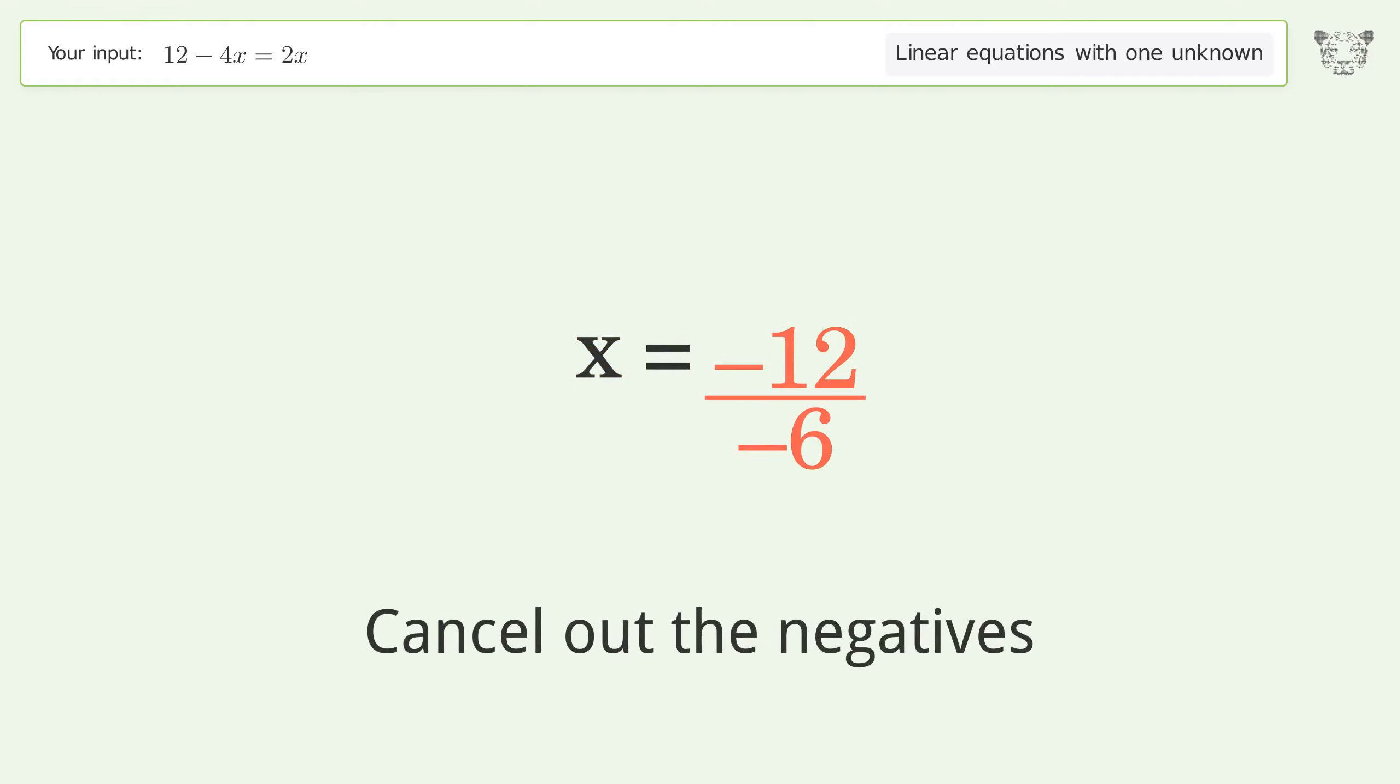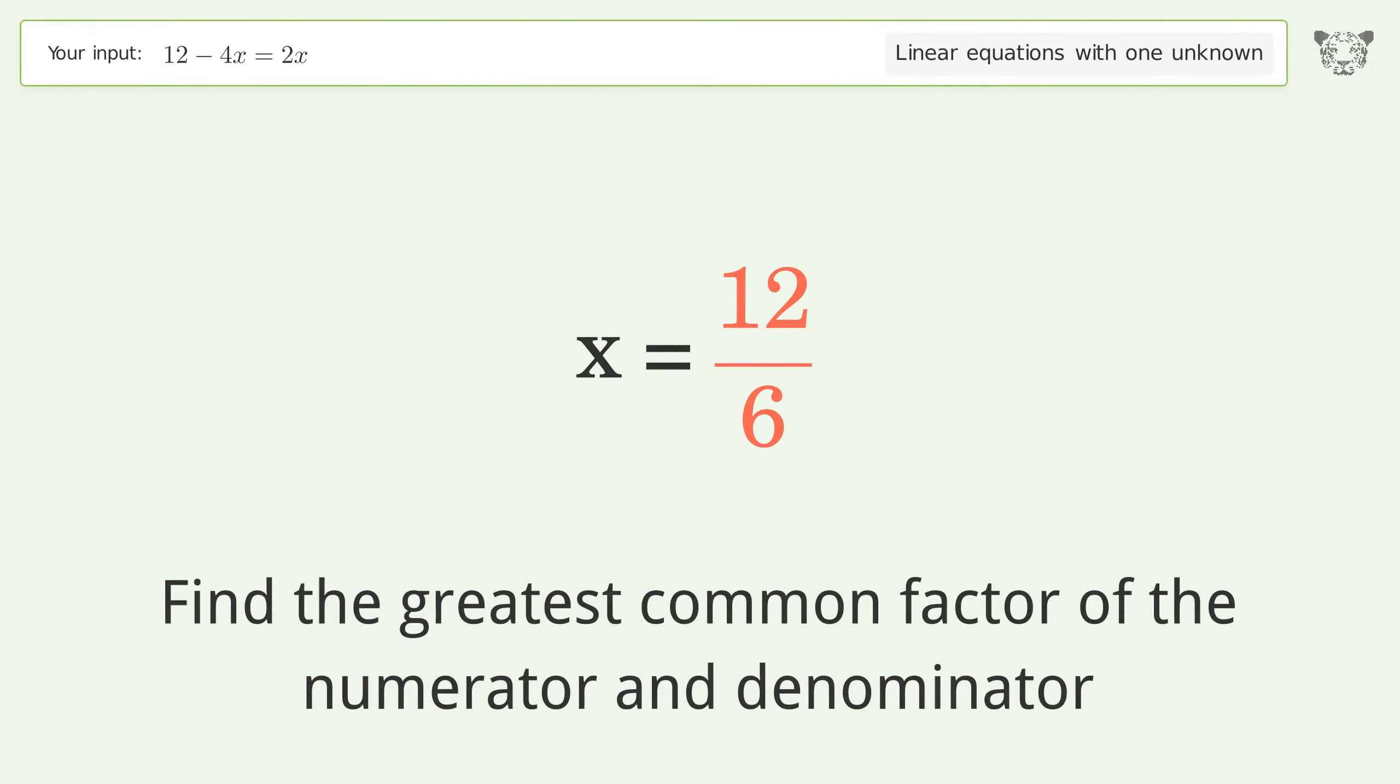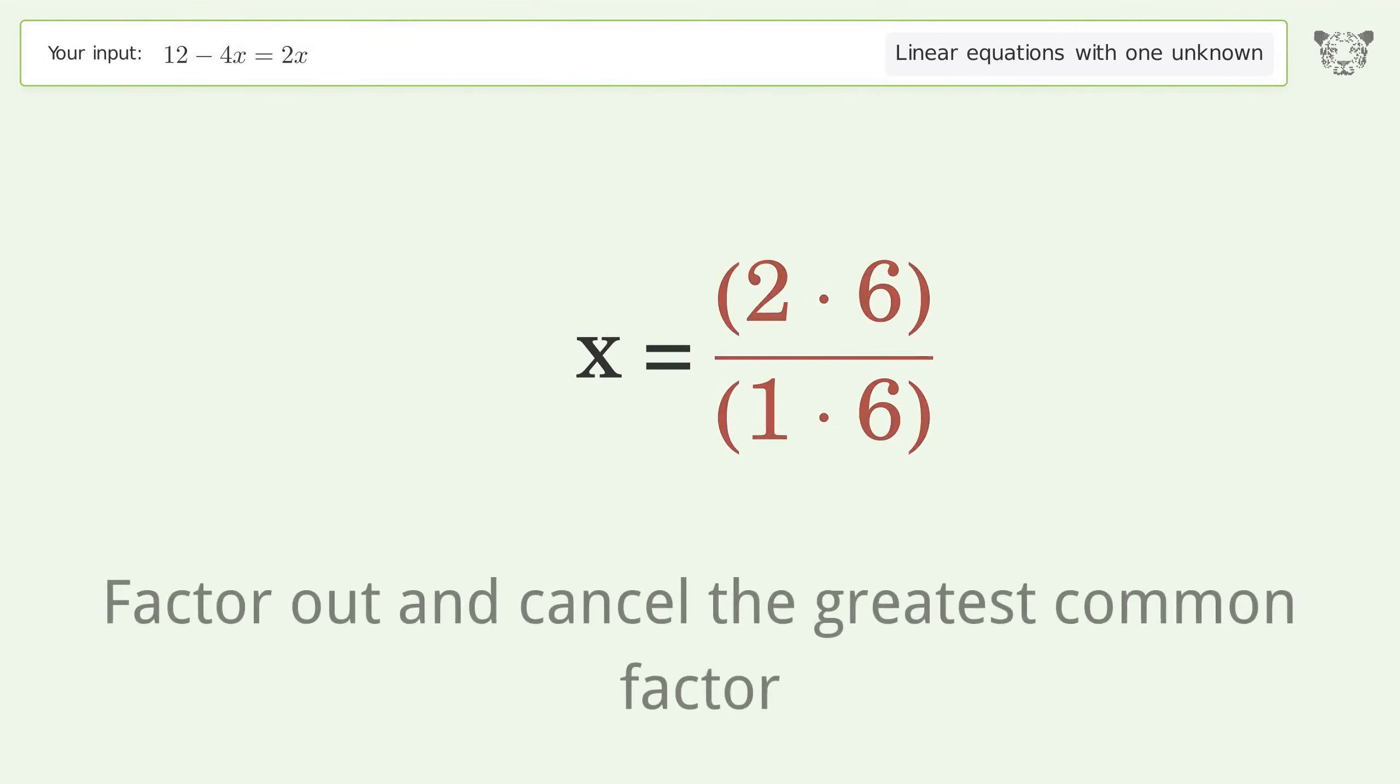Cancel out the negatives. Find the greatest common factor of the numerator and denominator. Factor out and cancel the greatest common factor.